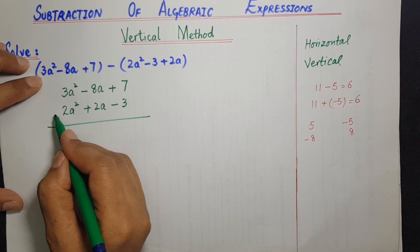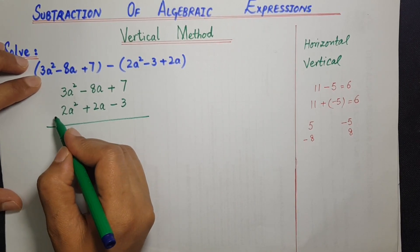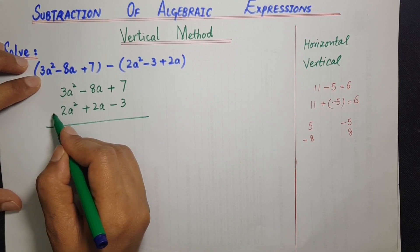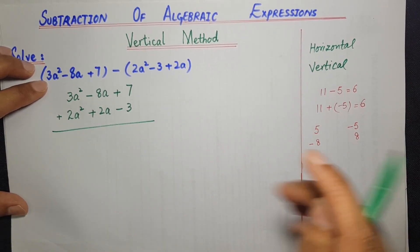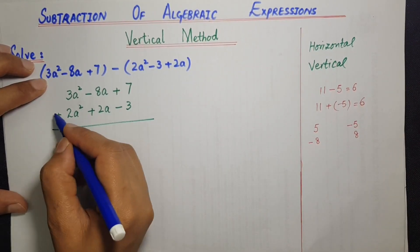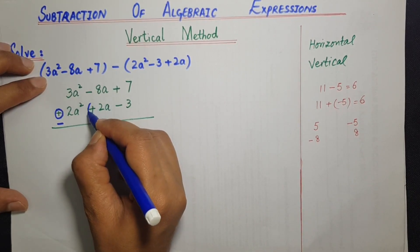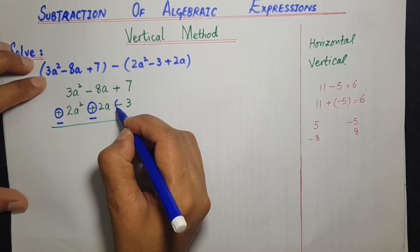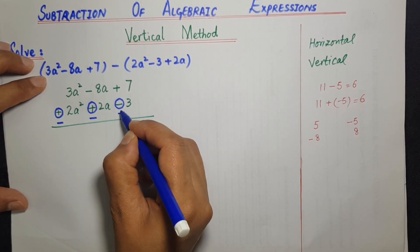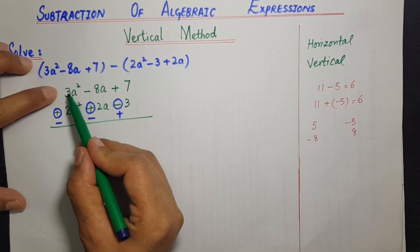اب اس کو subtract کرنے کے لیے additive inverse کے ساتھ plus کرنا ہے۔ additive inverse کے لیے second expression کے سب terms کے sign change کرنا ہے۔ جیسے یہاں plus ہے تو اس plus کو ختم کر کے minus کر دیں گے۔ یہاں پہ بھی plus ہے تو minus کر دیں گے۔ یہاں minus ہے تو plus کر دیں گے۔ اب ان کو add کریں گے۔